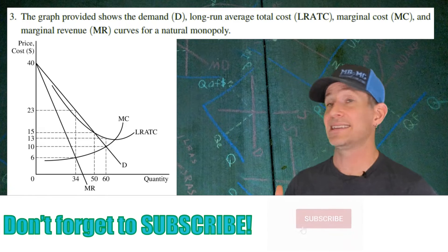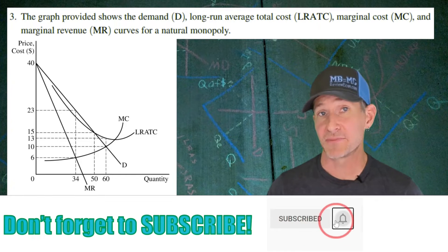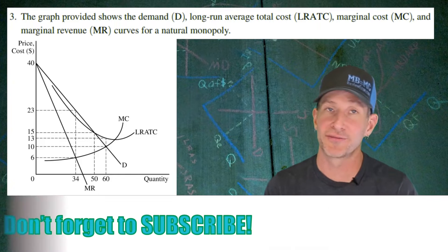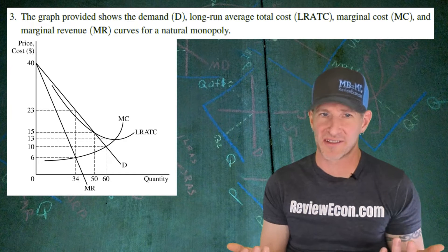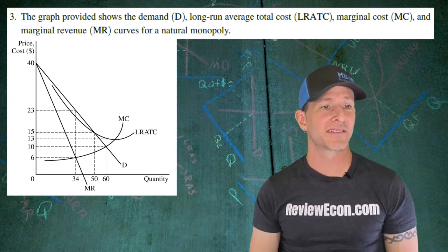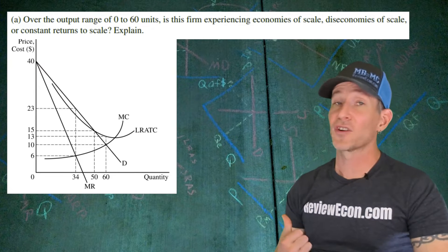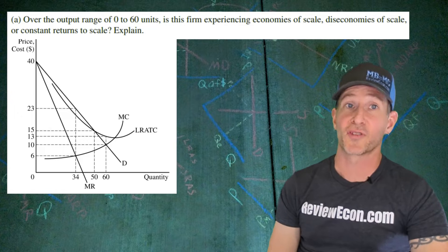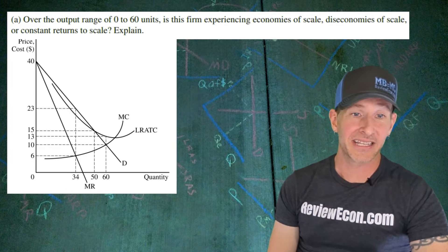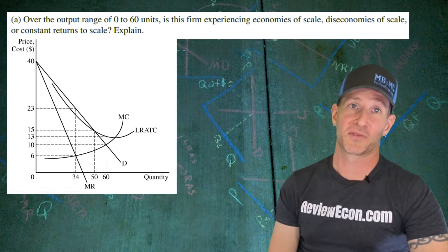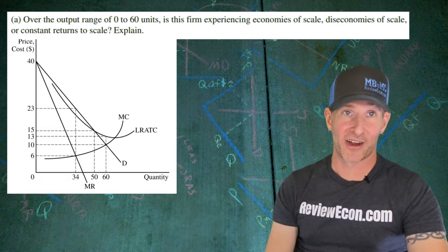For this question we have a natural monopoly graph that's already been provided for us. We have our demand, our long run average total cost curve, and marginal cost as well as marginal revenue. First question we have to answer here is about the first 60 units produced for this firm. The question is, is this firm experiencing economies of scale, diseconomies of scale, or constant returns to scale? And we have to explain our answer.